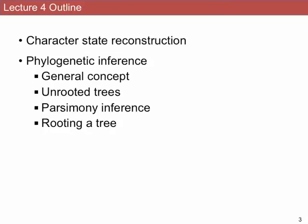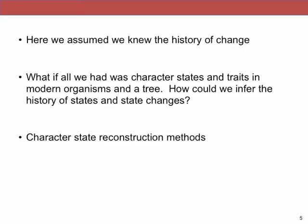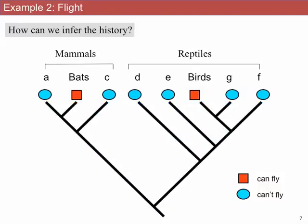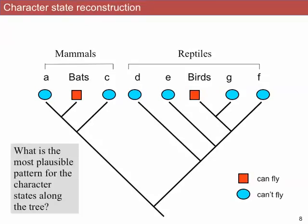I went through this at the end of the last lecture and I'm just going to quickly go through it again to prep you for the rest of today, which is this issue of character state reconstruction. Starting off, we assume we know what the phylogenetic tree looks like — that is, the branching order in the tree — and we know character states for the taxa at the tips of the tree. But we don't know what the ancestral character states are for any of the ancestors of the organisms that we're looking at.